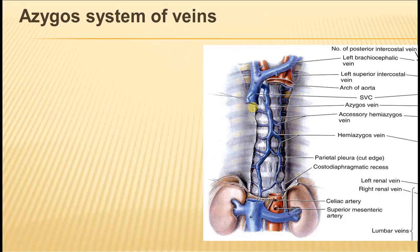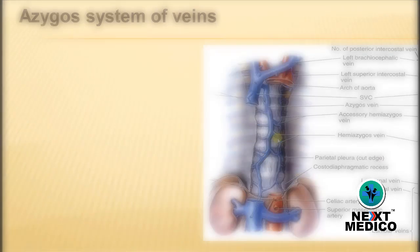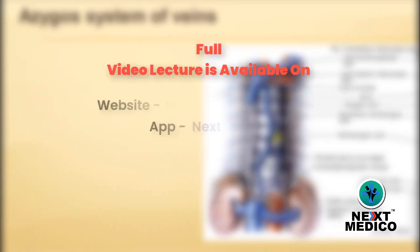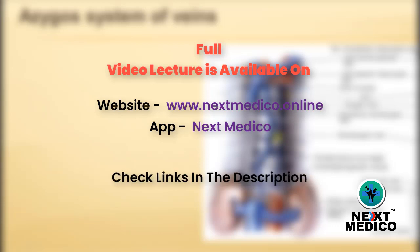It is actually a longitudinal or vertical structure. At the same time it also has a transverse component, especially in the termination of the two veins in the posterior mediastinum — they run transversely to end in the azygos vein. The azygos system of veins comprises mainly three veins: the azygos vein, the hemi-azygos vein, and the accessory hemi-azygos vein.